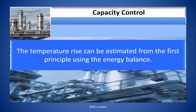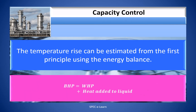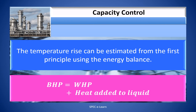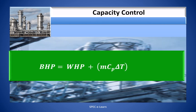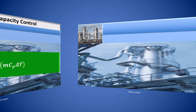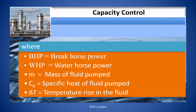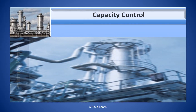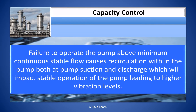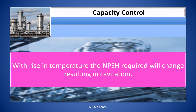The temperature rise can be estimated from first principles using energy balance: BHP = WHP + heat added to liquid, i.e., BHP = WHP + M·CP·ΔT, where BHP is the brake horsepower, WHP is the water horsepower, M is the mass of the fluid pumped, CP is the specific heat of the fluid pumped, and ΔT is the temperature rise in the fluid. Failure to operate the pump above minimum continuous stable flow causes recirculation within the pump, both at suction and discharge, which leads to higher vibration levels. With the rise in temperature, the NPSH required will change, resulting in cavitation.